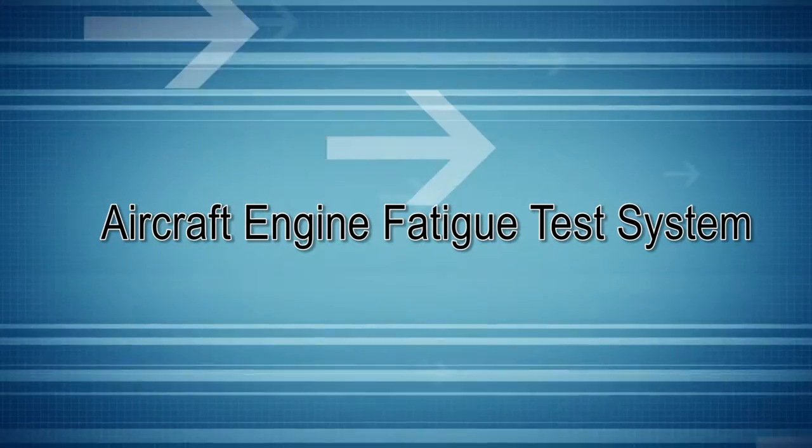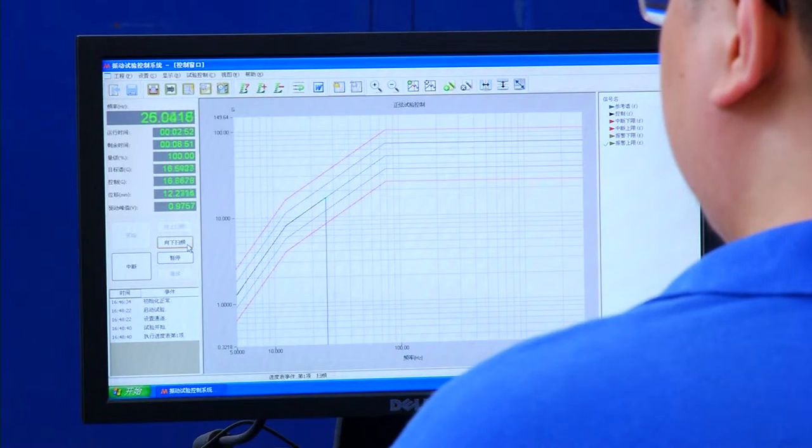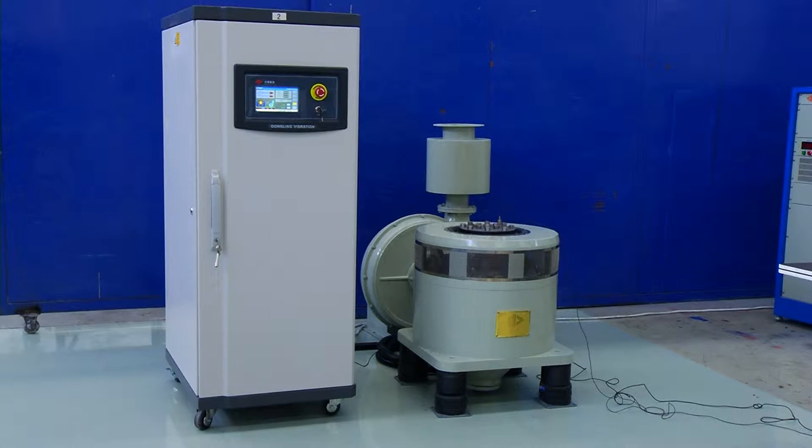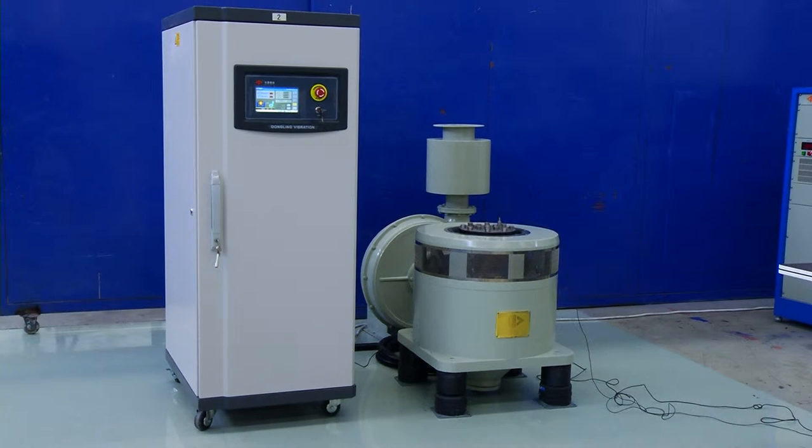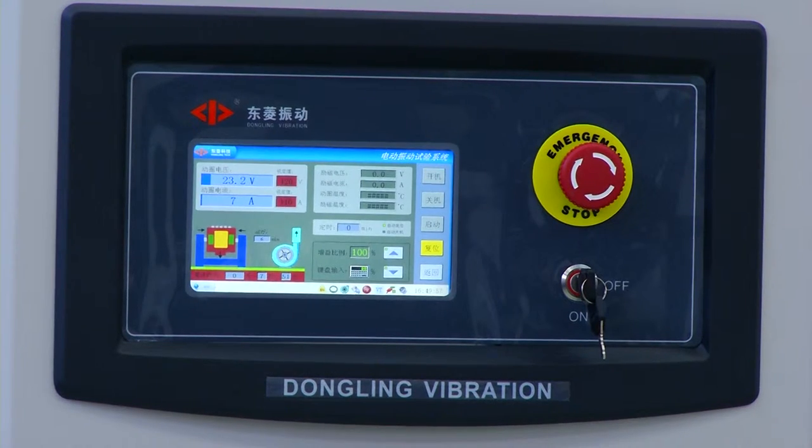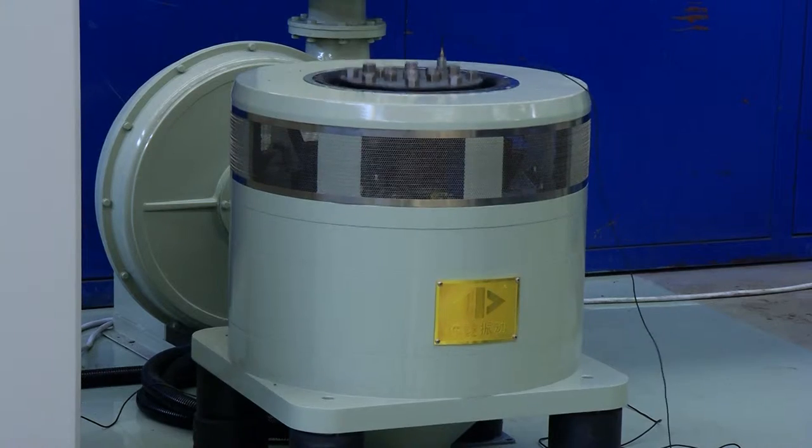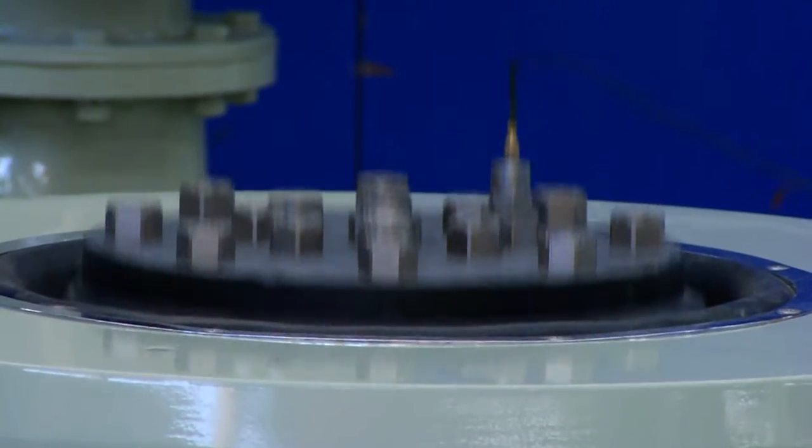Aircraft Engine Fatigue Test System is designed and produced by Dongling to test turbofan blades. Test acceleration can reach 250 G and usable frequency is up to 5000 Hz. It has successfully supported turbofan blade tests for Chinese commercial airplane.